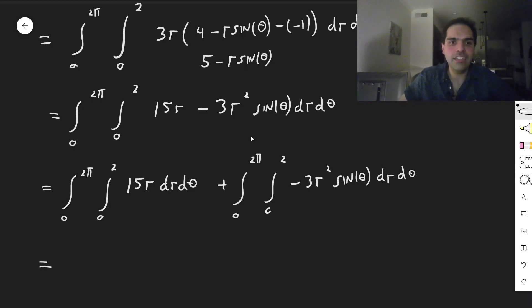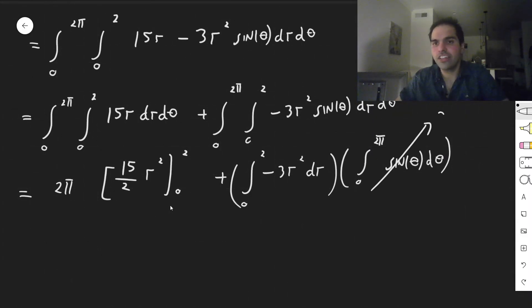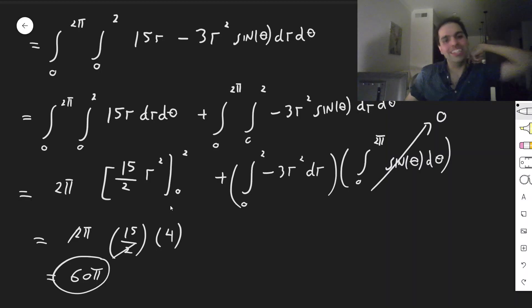All right. And then for this integral, what's nice is that there's no theta. So 2 pi and an antiderivative of 15r. It's 15 halves r squared from 0 to 2. And here we can split up the integral. Integral from 0 to 2 minus 3r squared dr, integral from 0 to 2 pi sine of theta d theta. But the nice thing is, if you evaluate this integral, you essentially get 0. And so in the end, we're just left with this part. So 2 pi times 15 halves times 4 minus 0. And I think we get 60 pi. So very pi-filled cannoli. Very, very delicious. Buon appetito!